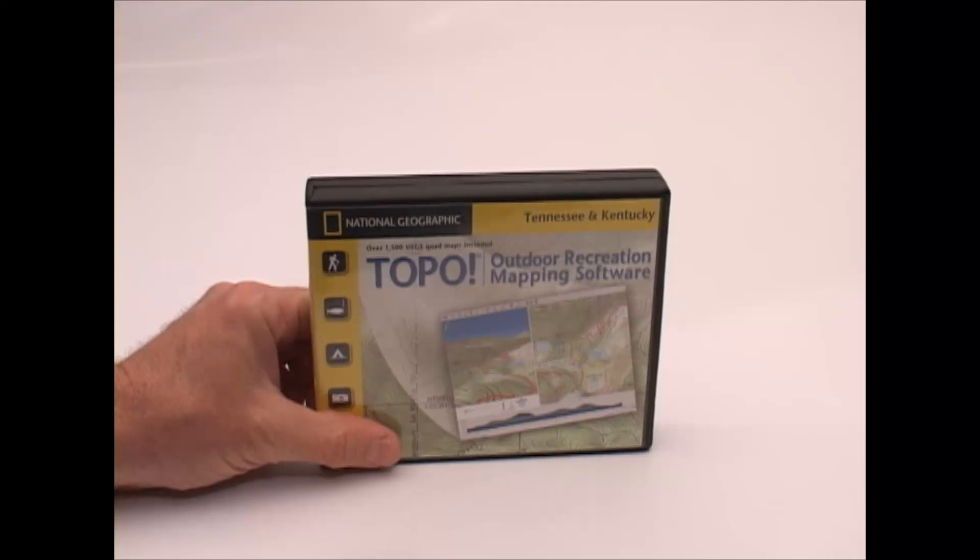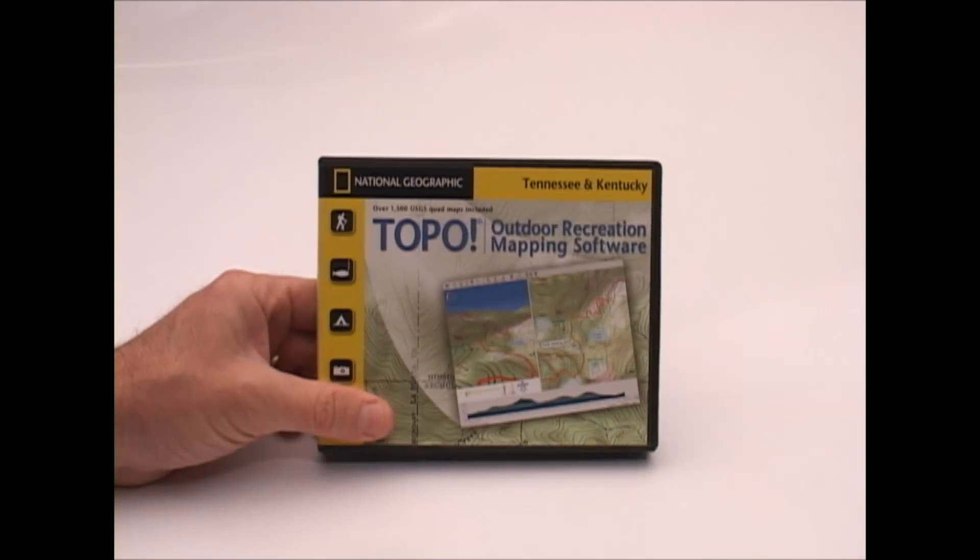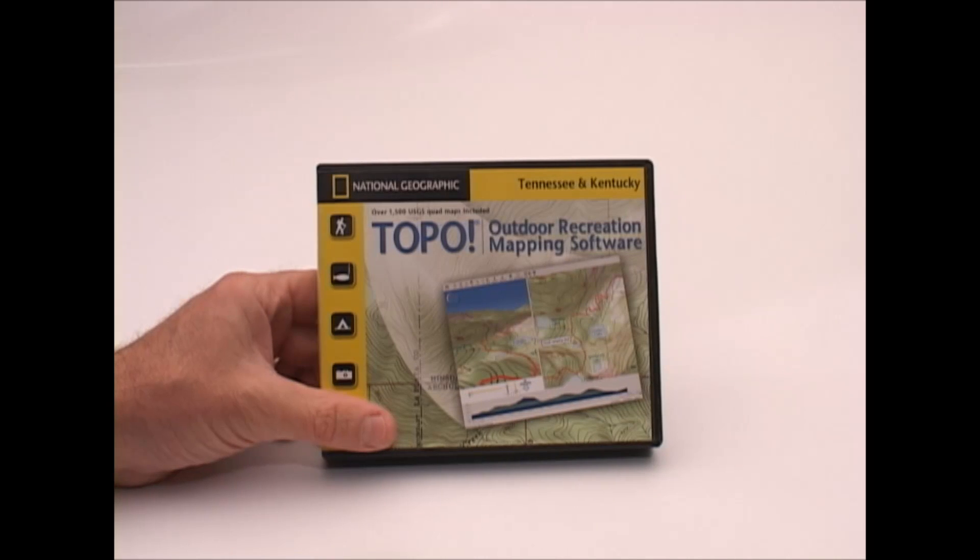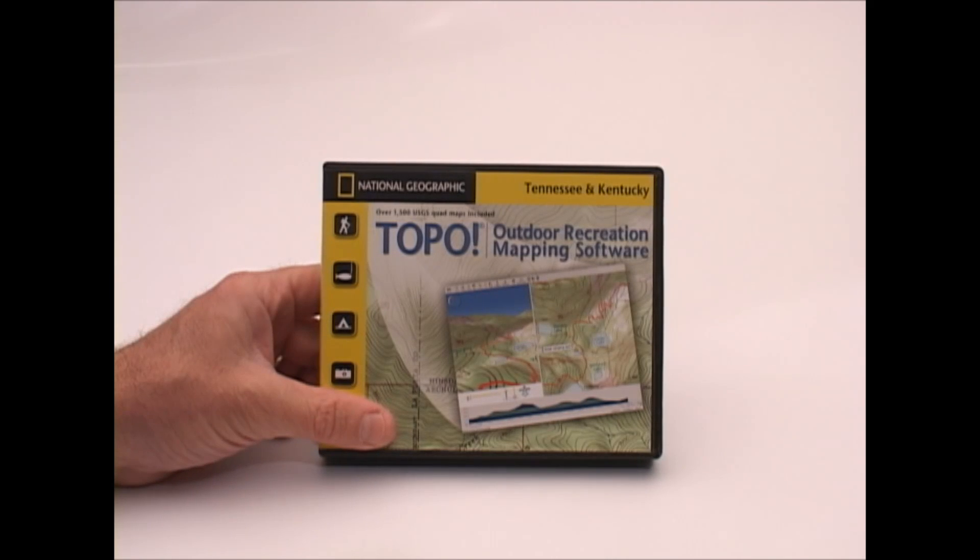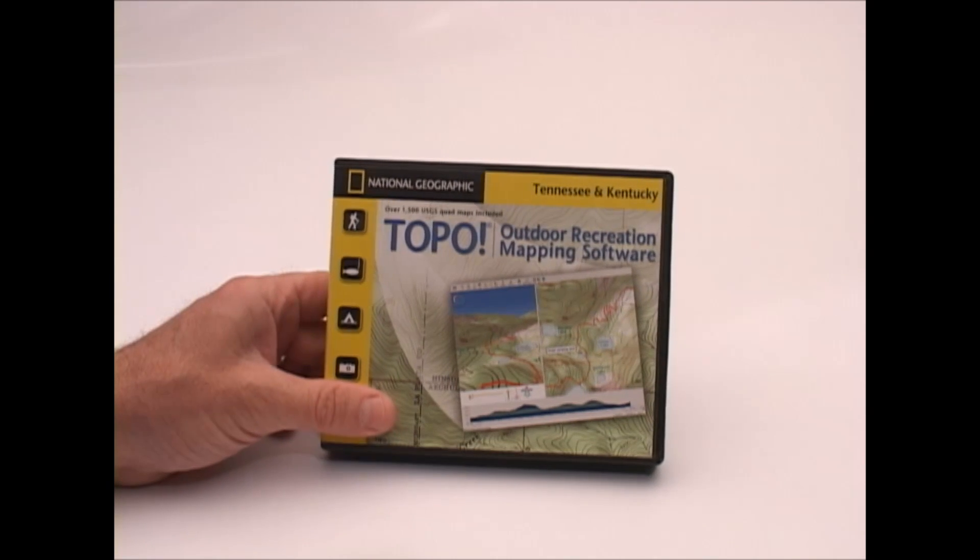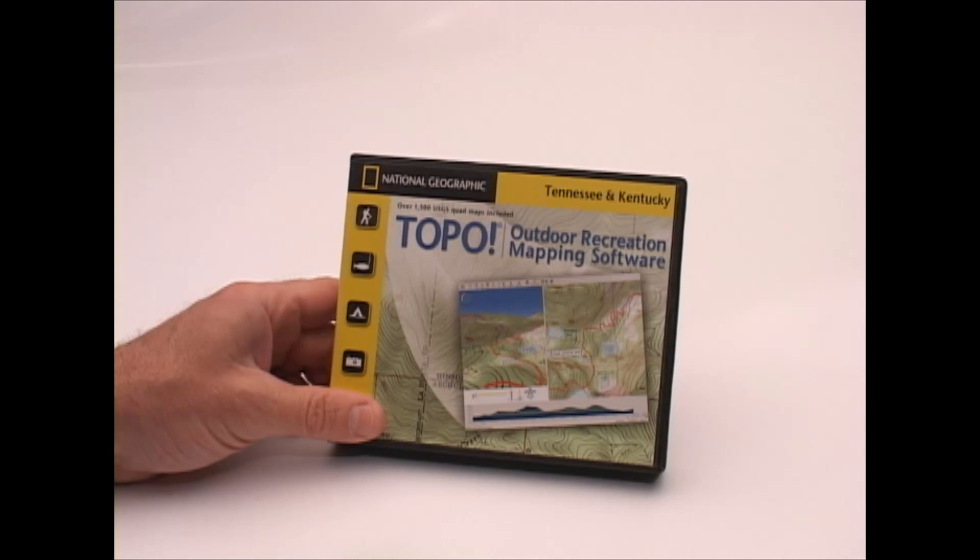Each set of discs actually has three sets of map series. It has the one in 500,000 series. It has a one in 100,000 series, which is also known as the 15 minute series. And the series which is really the only useful series for hunting purposes, which is the one in 24,000 series, also known as the seven and a half minute quads. You'll see them call seven and a half minute quads frequently.